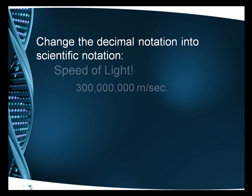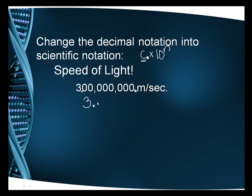So let's change the speed of light into scientific notation. Now remember, scientific notation is c times 10 to the n. We only get one number before the decimal place in scientific notation. So instead of the decimal being here, it needs to be here. So to start out, I'm going to have 3.0 times 10.